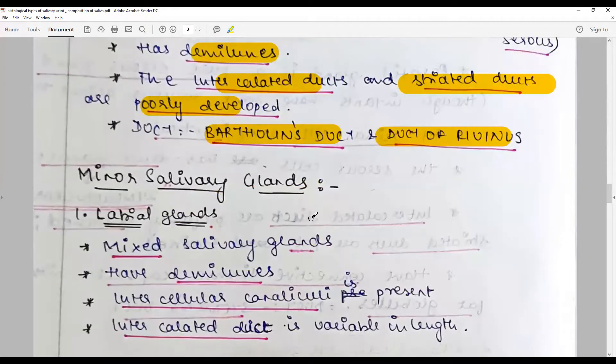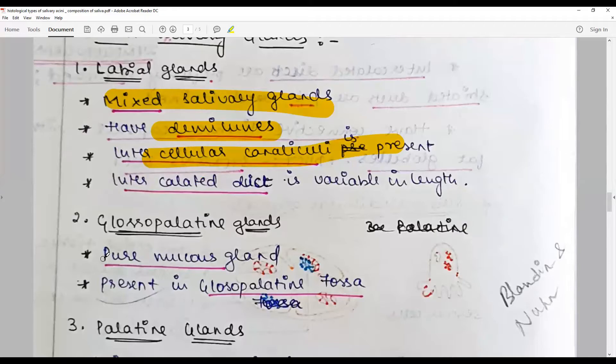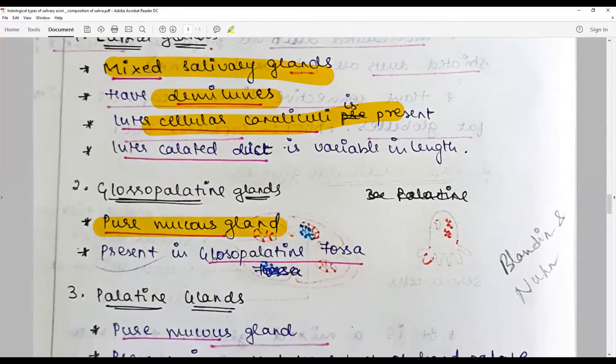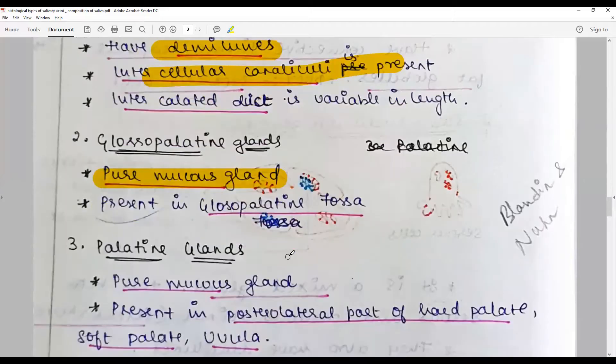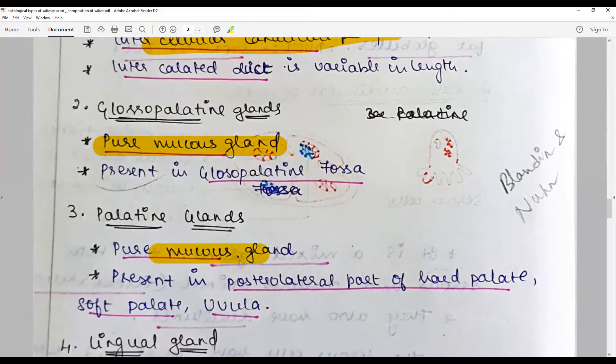Now going into the minor glands: labial glands are mixed salivary glands, have demilunes, intracellular canaliculi are present, intercalated ducts of various length. Glossopalatines are the only pure mucous minor salivary glands, present in the glossopalatine fossa.